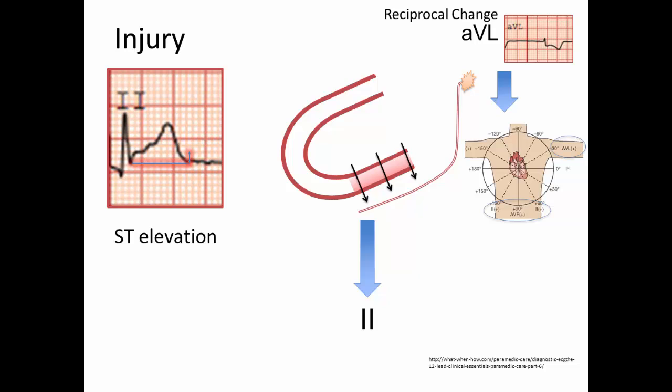A diagnosis of ST elevation MI requires one millimeter of ST elevation in two contiguous leads, except two millimeters of ST elevation in leads V2 to V3 for an anterior STEMI and ST depression in leads V1 through V3 for a posterior STEMI, since the vectors are reversed in this area.